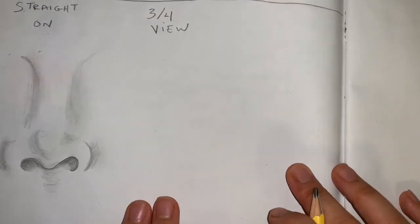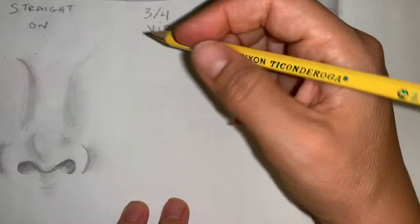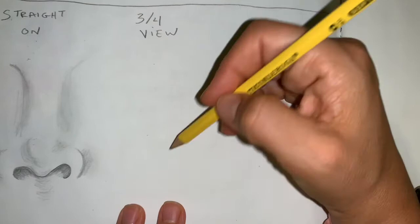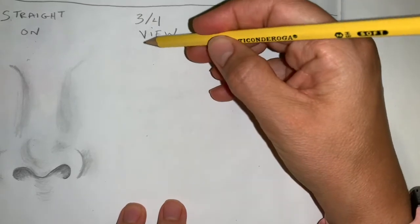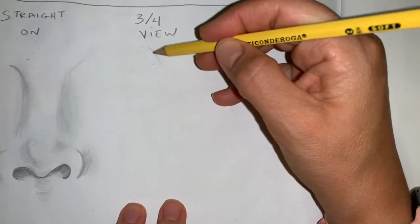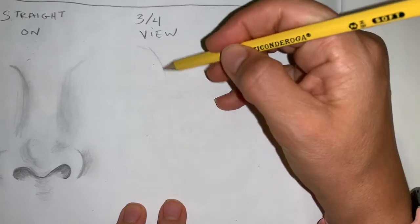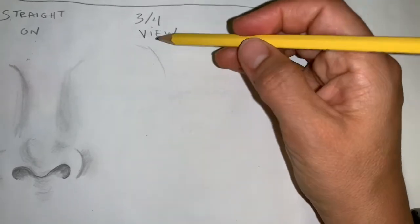This next nose is easier to perceive. This is three-quarters view. First, you're going to have the eyebrow so you can get an idea of where this nose is coming from. We're going to give it the eyebrow bone.